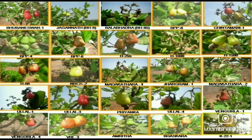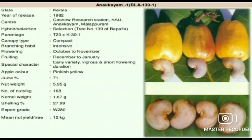Bhubaneswar 1 variety. In the second picture, Jagannath BH 6 variety. Anakayam is a variety introduced in the state of Kerala. Its parentage is T20 × K31. Apple color is pinkish yellow. Nut weight is 5.95 grams. Mean nut yield per tree is 12 kg. Shelling percentage of Anakayam is 27.99%. Kernel weight is 1.67 grams.